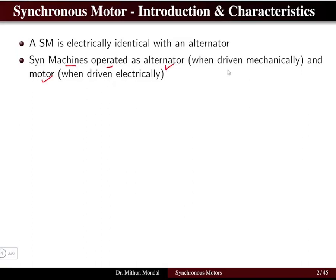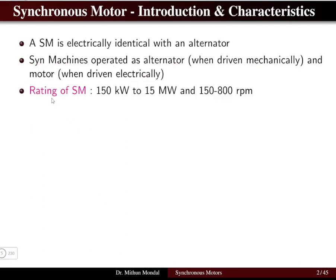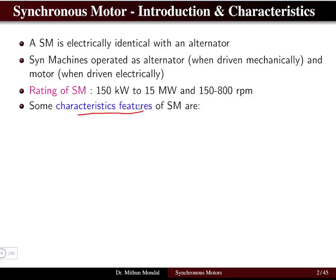Synchronous machines operate as an alternator or a motor if driven mechanically or electrically. When the synchronous machine is driven mechanically it operates as an alternator, and when driven electrically it operates as a motor. Generally the rating of a synchronous machine falls between 150 kilowatt to 15 megawatt and the speed ranges from 150 RPM to 800 RPM.